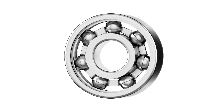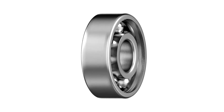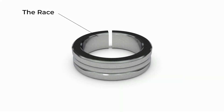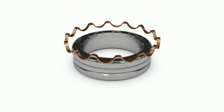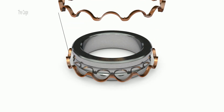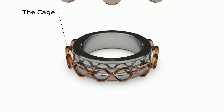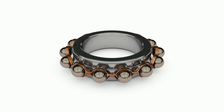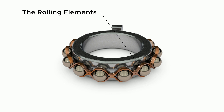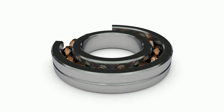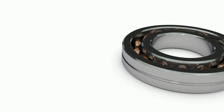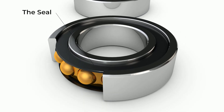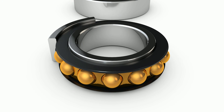Bearing malfunctions are the leading cause of motor failure. The bearing structure includes four key elements. First, the race — most motor applications have the inner race rotating and the outer race fixed. Then there's the cage, which keeps the rolling elements separate so they don't collide while still allowing them to rotate freely. Third, rolling elements — typically balls or cylinders are the rolling elements used in the bearing structure. Finally, the seal, which offers protection against outside debris and helps keep the grease inside the bearing.